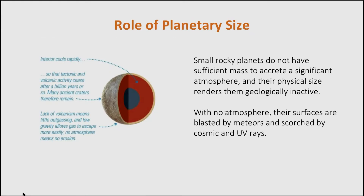The size matters for a planet because it dictates much of its subsequent properties and behaviors. Small rocky planets do not have sufficient mass to accumulate an atmosphere — Mercury is a good example in the inner solar system — and their physical size is such that internal pressure does not create liquid magma or a molten core. Therefore they are not geologically active. Mercury is geologically dead.